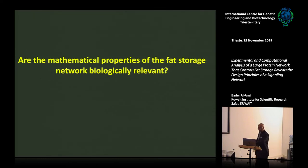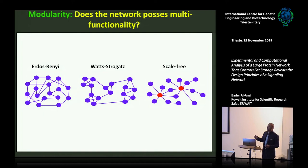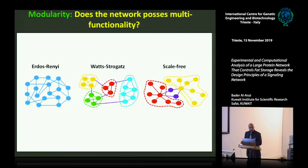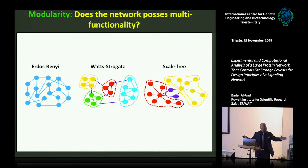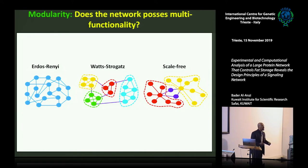The first mathematical property is modularity. Erdős-Rényi networks are not modular and tend to be jack of all trades and master of none. Watts-Strogatz and scale-free networks are modular, allowing them to dedicate part of their structure to optimized subtasks — enabling multifunctionality. Since our network is Watts-Strogatz and therefore modular, does that translate to multifunctionality? I will examine that and show you the data.